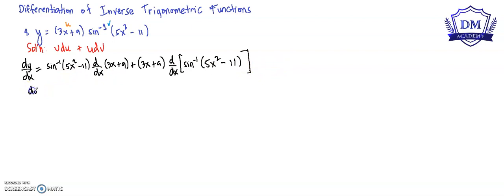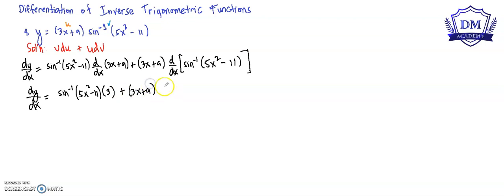So our dy/dx is equal to the inverse sine of (5x² - 11) multiplied by the d/dx of (3x + 9), plus (3x + 9) times the d/dx of the inverse sine of (5x² - 11). The derivative of (3x + 9) is 3. Then we apply d/du of arcsin(u) multiplied by d/dx of (5x² - 11).